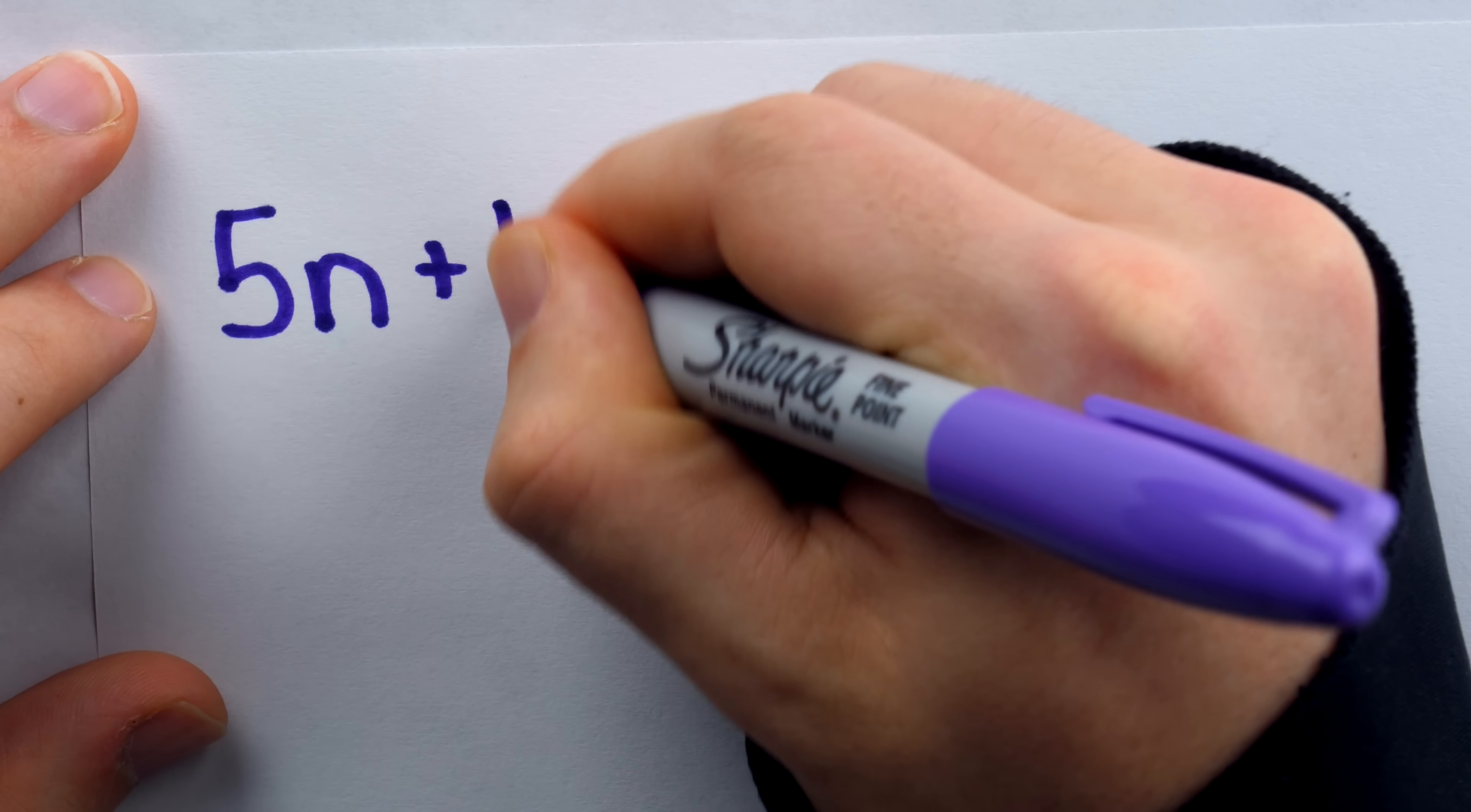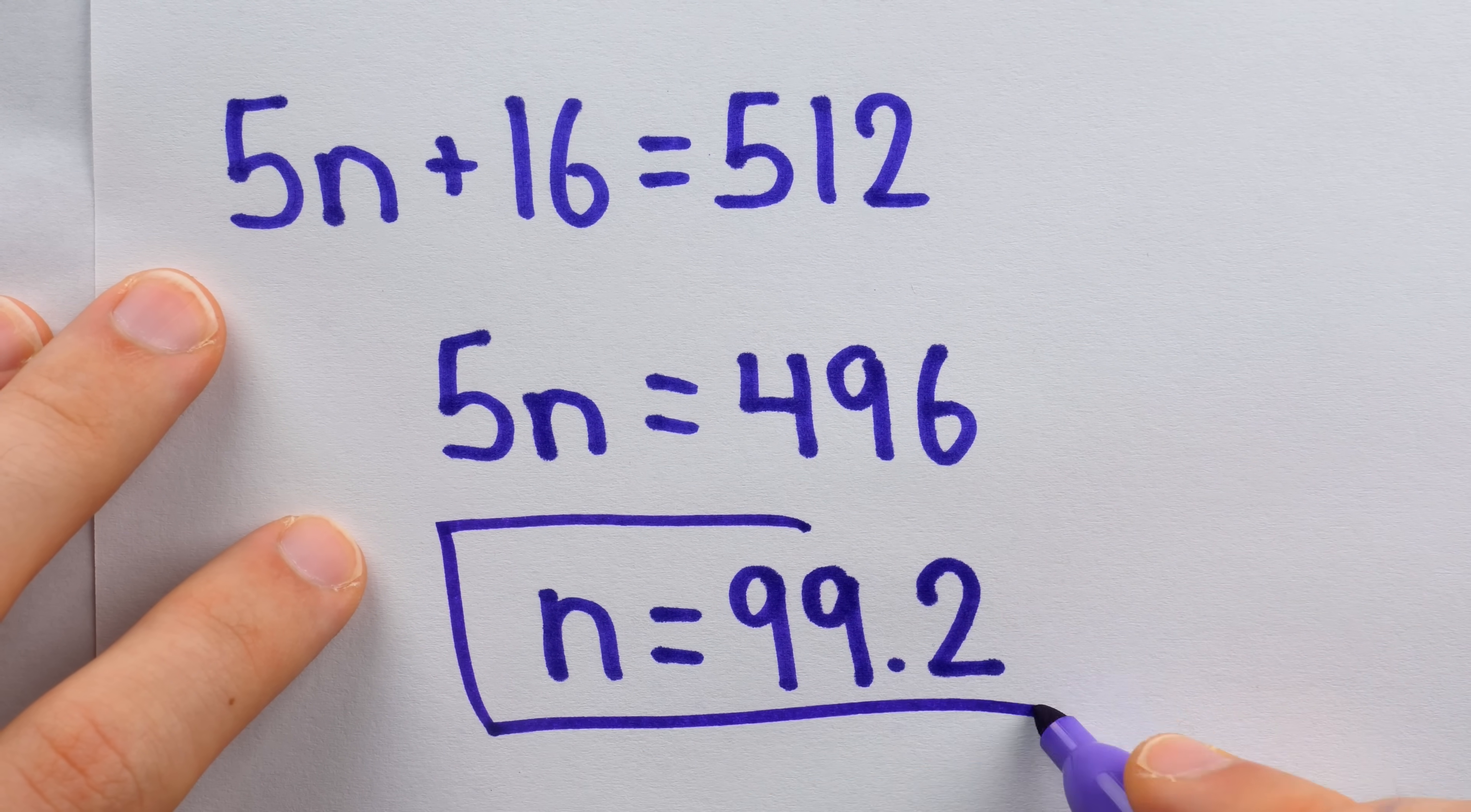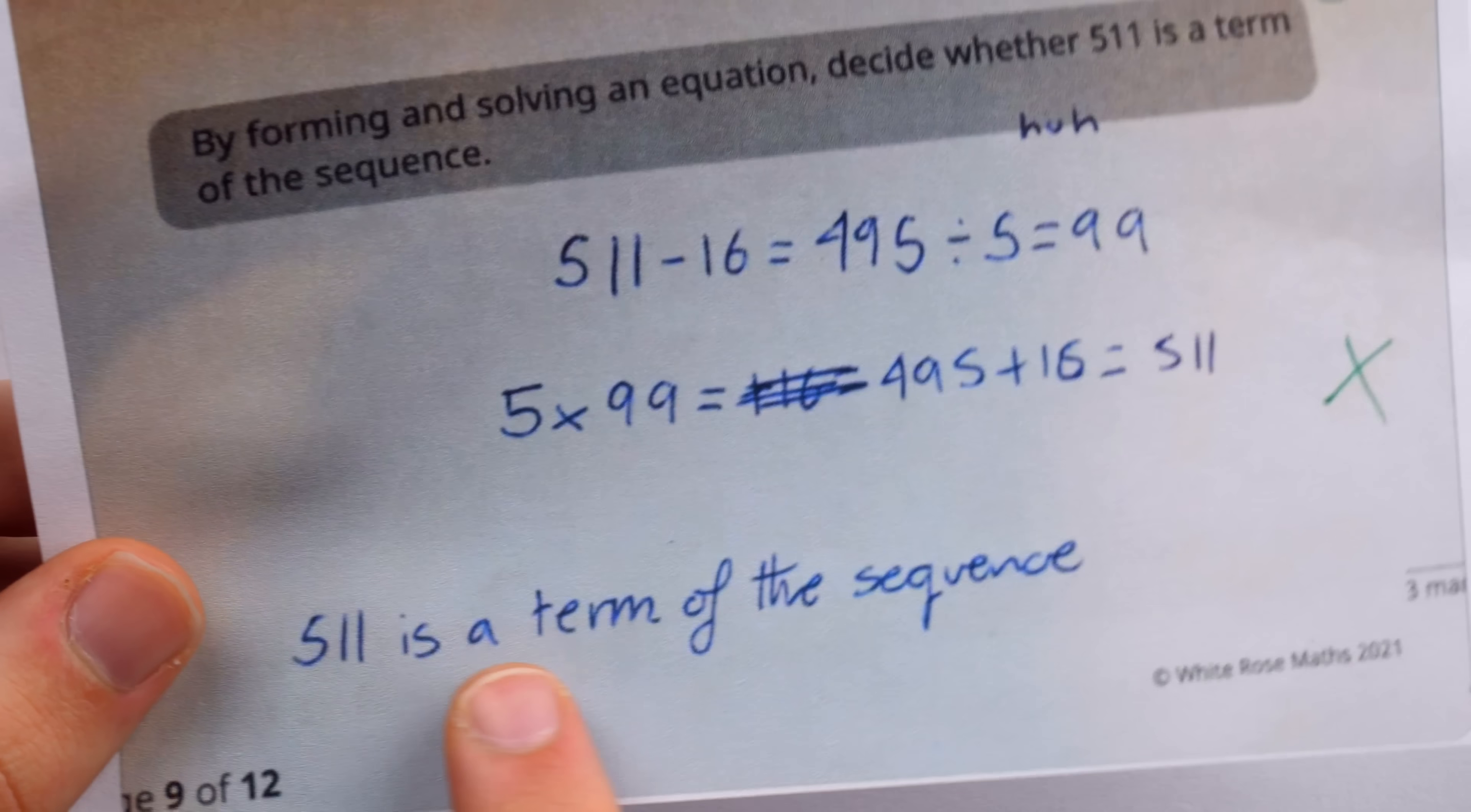In contrast, if we were asked to find if 512 is a term of the sequence, we'd set it up the same exact way and we would solve for n. Then when we divide both sides by 5, we wouldn't get 99, a positive integer, but in fact 99.2. We'd then notice this isn't a positive integer, which means that 512 isn't a term of the sequence. So then how on earth, in this question worth three marks, did the student not earn a single one? They did the work, found that n equals 99, and concluded correctly that 511 is a term of the sequence.